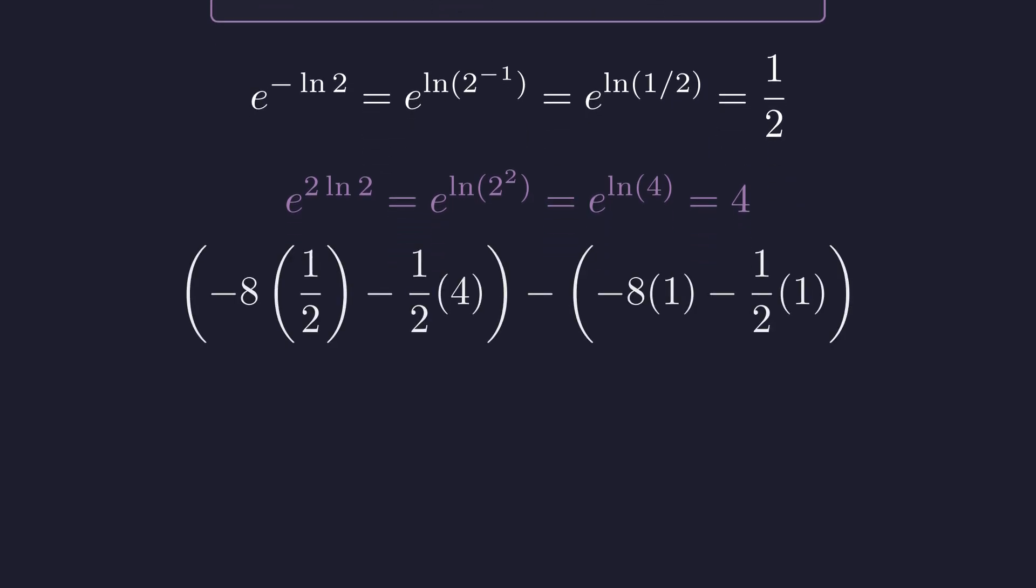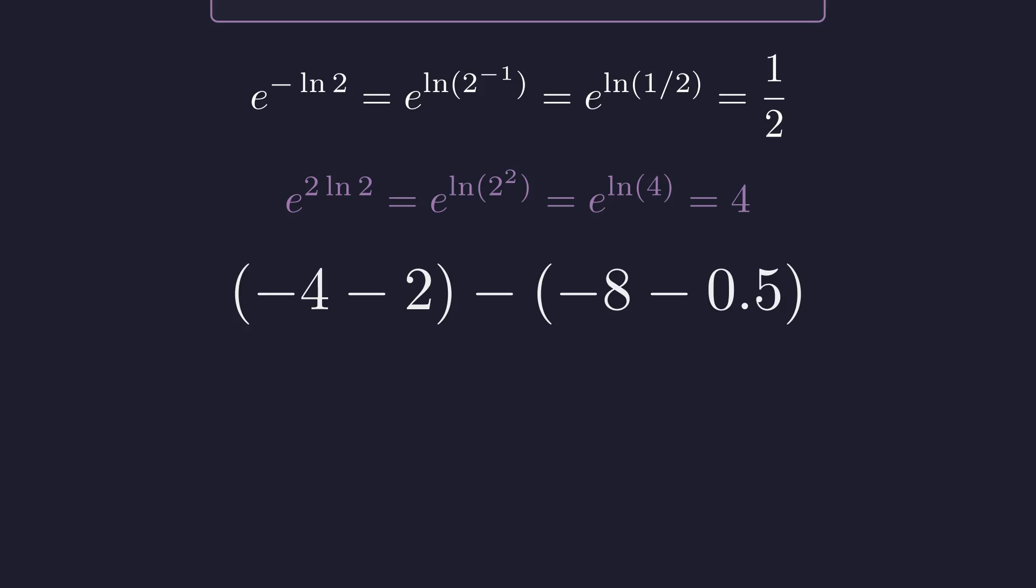Also, e to the 0 is 1. Substituting everything gives us a purely arithmetic expression. In the first bracket, negative 8 times 1 half is negative 4, and 1 half of 4 is 2. So that's negative 6 in the first bracket. And in the second bracket, we have negative 8.5. Negative 6 minus negative 8.5, which is the same as negative 6 plus 8.5. And that gives us 2.5, so the area of the shaded region is 2.5 square units.